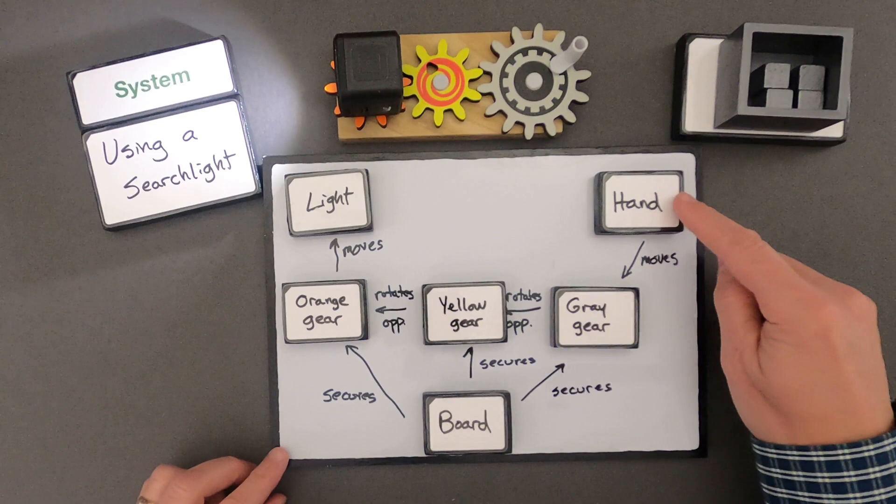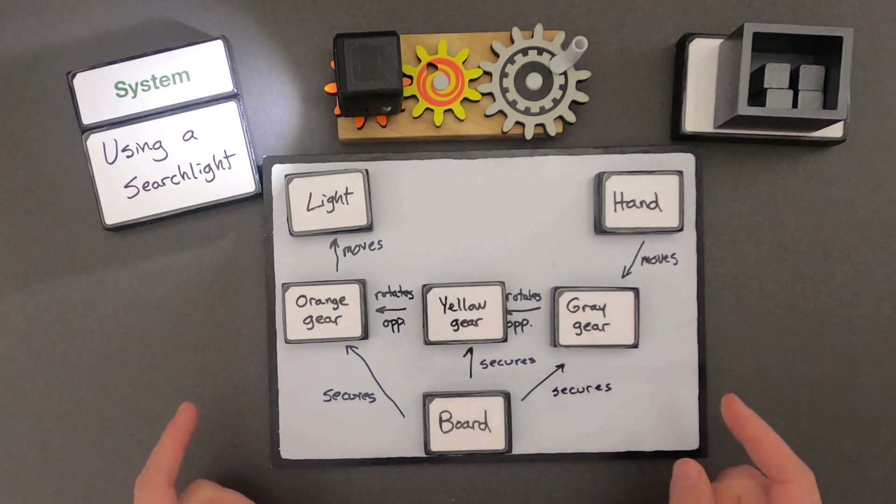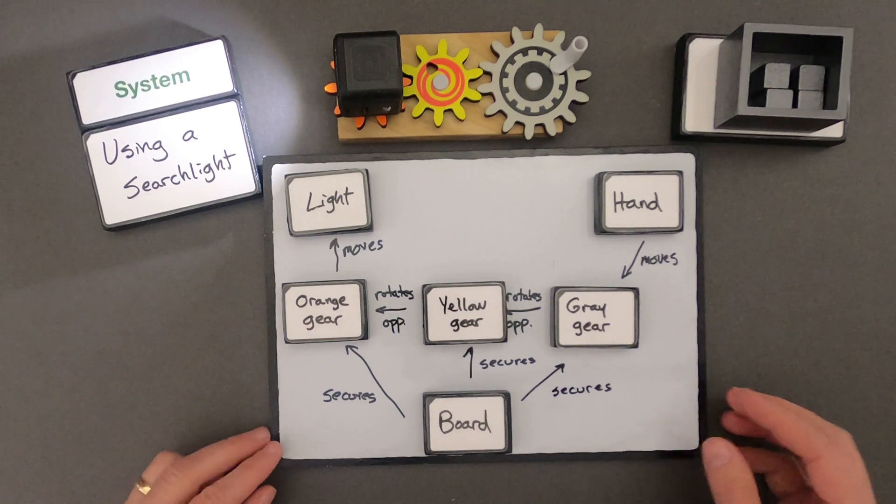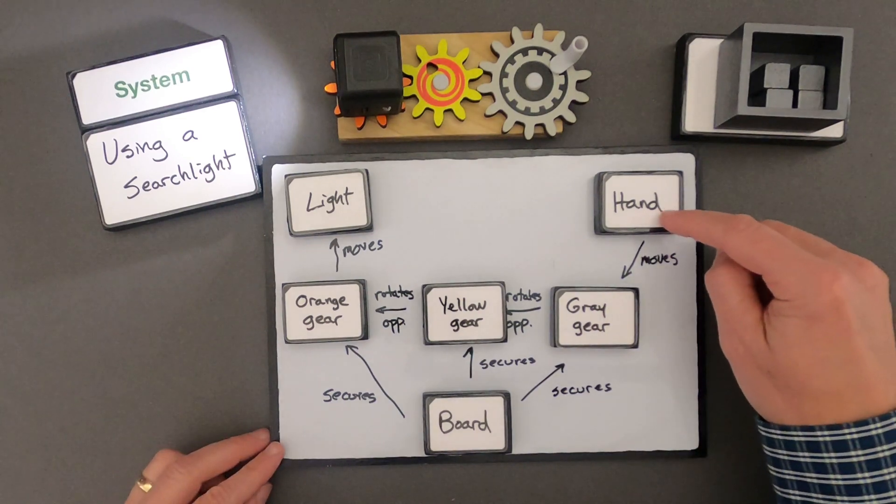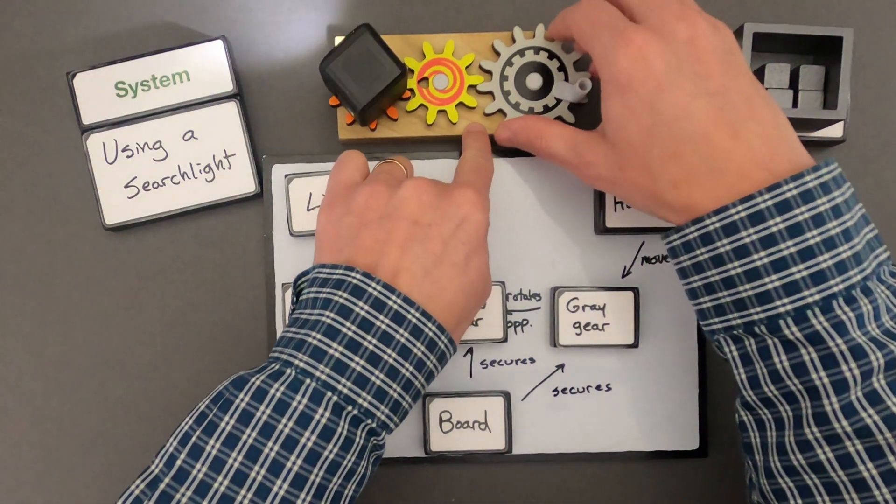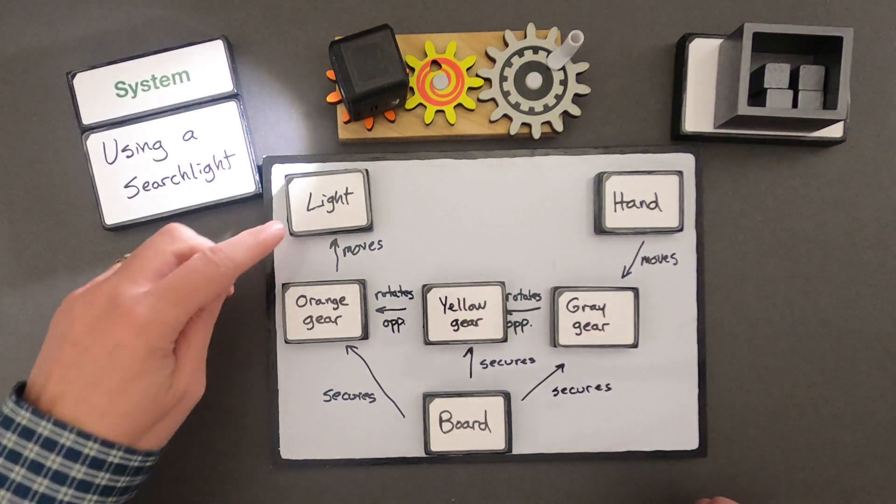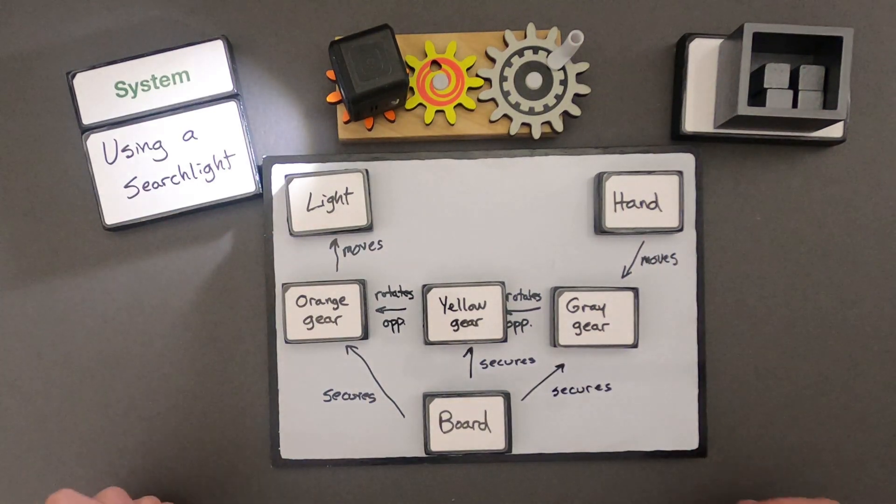So this is my thinking around the geared searchlight. And so as I use the searchlight, I move my hand. And you can see that the arrows are moving in the direction almost as if I was reading a sentence. So when I move my hand, my hand moves the gray gear, which rotates the yellow gear in the opposite direction, rotates the orange gear in the opposite direction, and then that turns the light.